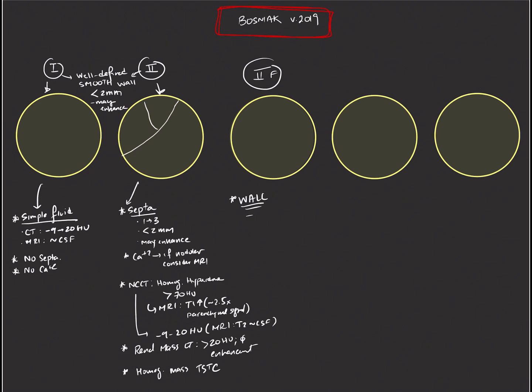What are the features we're looking for in Bosniak 2F lesions? Well, we have to look at the wall itself. The wall, like the other two lesions, will be smooth in its appearance. However, its thickness will be slightly more. It will be minimally thickened, whereas Bosniak 1 and 2, it's up to two millimeters in thickness. Bosniak 2F, we're talking about three millimeters in thickness. So it's slightly more thick than we see in Bosniak 1 and 2.